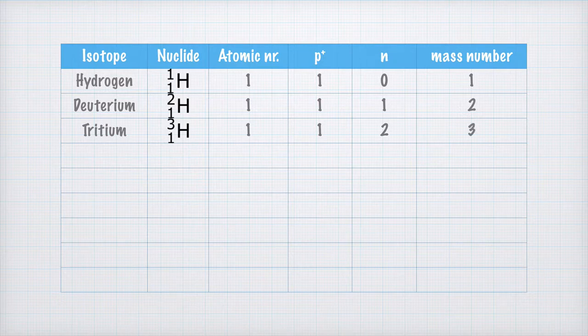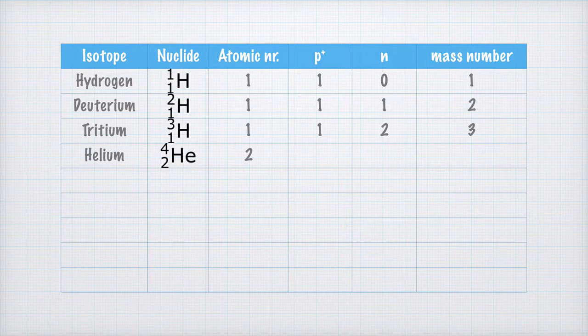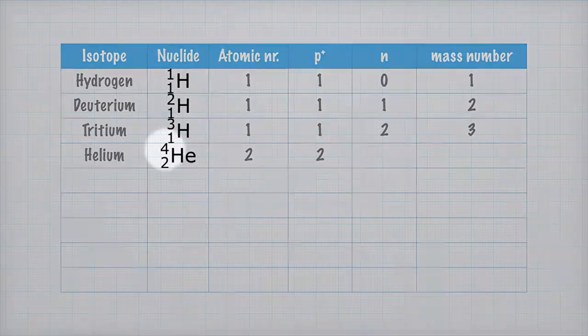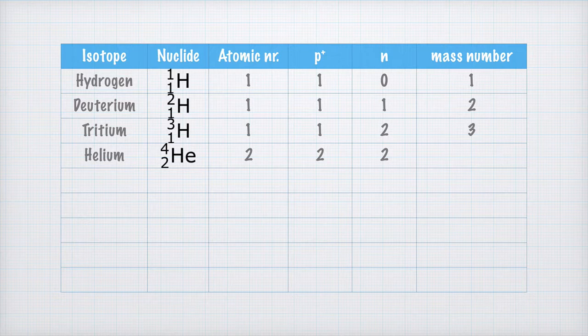The next atom in the periodic table is helium, and we'll specifically look at this nuclide. The atomic number is 2, so let's write this here. And, of course, we also know that the number of protons is 2. The mass number is 4, and then we know that since we already have 2 protons, the number of neutrons must be 4 minus 2 equals 2. The mass number is then 4.